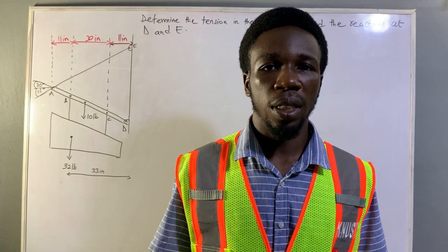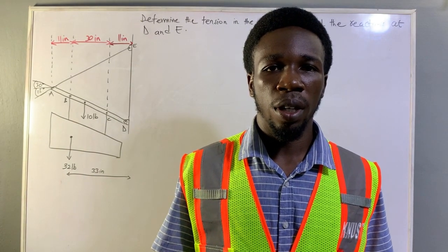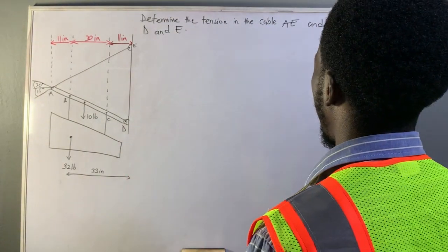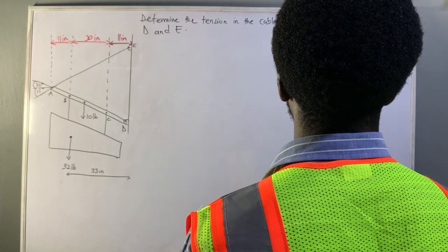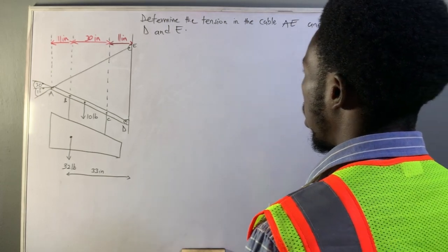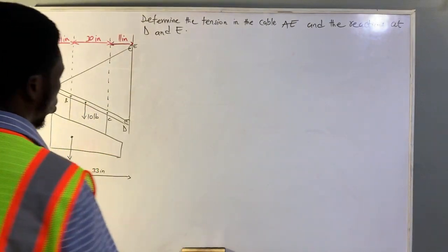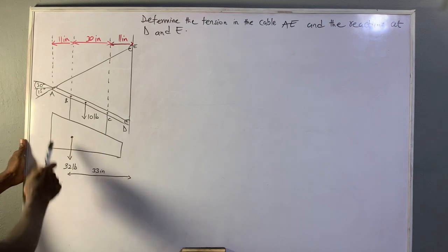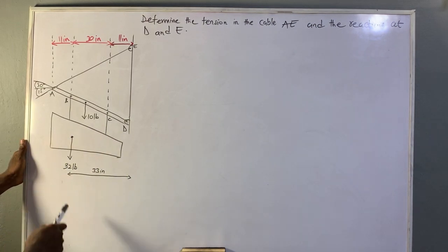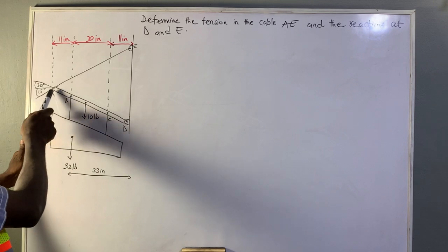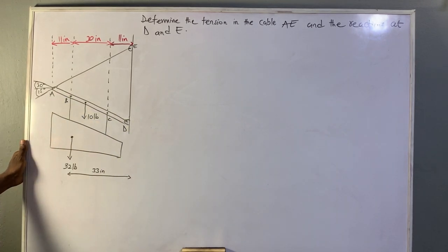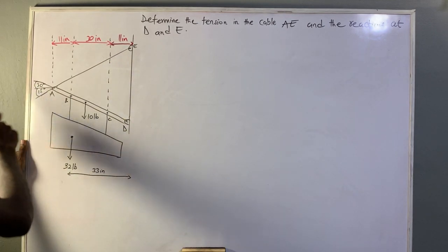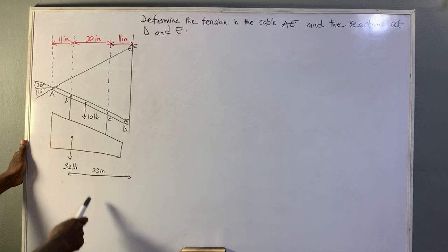Hello everyone, welcome to this lesson. In this video we are going to solve this question on the screen. The question says: determine the tension in the cable AE and the reactions at D and E. We have a signage with a weight of 32 pounds, a bar AD with a weight of 10 pounds, and point AE with 30 degrees, 15 degrees, 33 inches, 11 inches, 30 inches, and 11 inches.